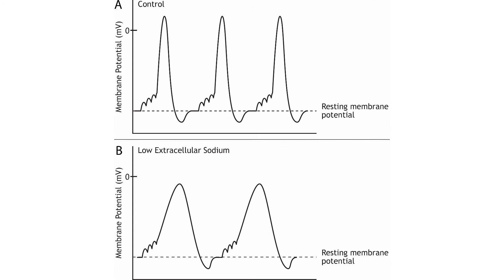For a given cell, all action potentials have the same characteristics. They depolarize to the same membrane potential value and take the same amount of time. However, different neurons may exhibit different action potential characteristics. Likewise, if a neuron has a change in its environment, like altered extracellular ion concentrations, the shape of the action potential would change due to a change in the electrochemical gradients. For example, if the external concentration of sodium is decreased, the equilibrium potential of sodium, as well as the strength of the electrochemical gradients, will change, which will result in a slower rate of rise and a lower amplitude of the action potential.